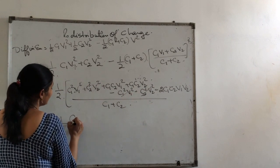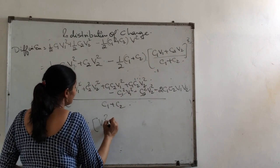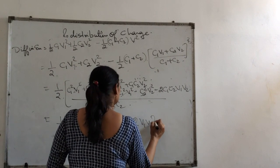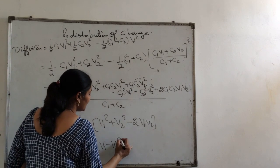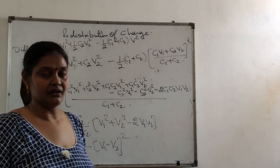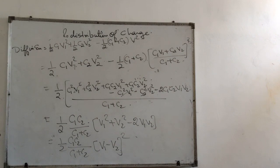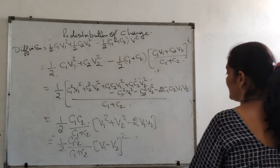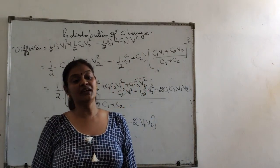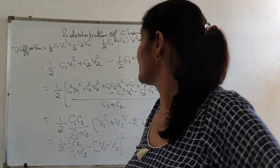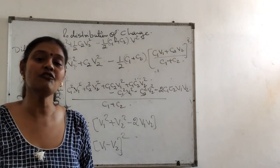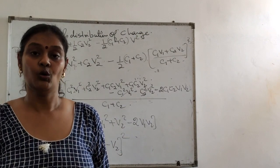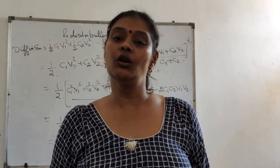You will have half C1 C2 upon C1 plus C2 times V1 square plus V2 square minus 2 V1 V2, which is V1 minus V2 whole square. You can see this result can never be negative because V1 minus V2 is in square format. This means initial energy will always be greater than final energy. It means there will be a loss of energy when you connect the capacitors like this. You can never have a gain in energy, you will always have a loss.